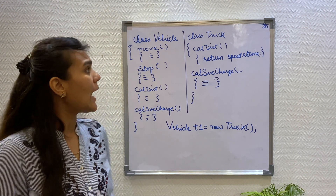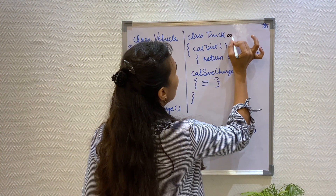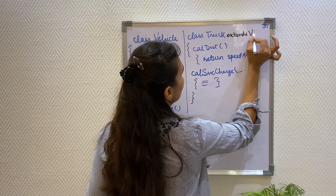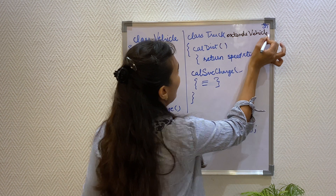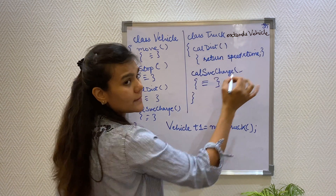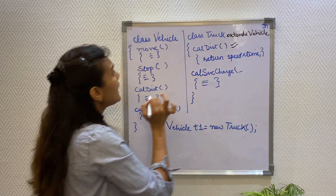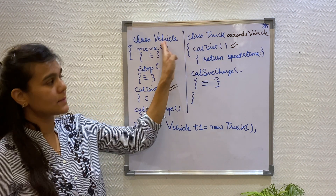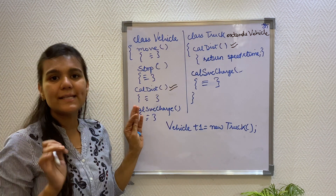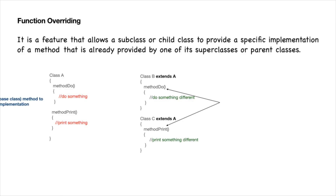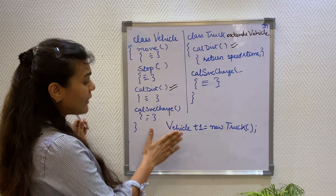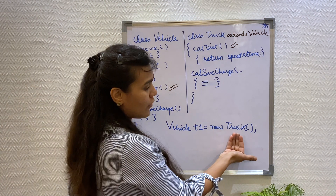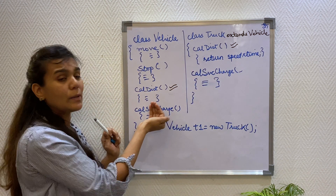When I was discussing inheritance, I had shown you how the truck class was extending the vehicle class. As you can see, the calculate distance method is present in both the truck class and the vehicle class — in both the child class and the parent class — but with different implementations. And this is what overriding is. Overridden methods are those methods which have the same name but are present in the parent class and in the child class with different implementations. When I create the reference of my base class but the object of my child class, which calculate distance method will be called?